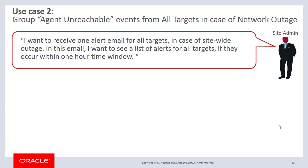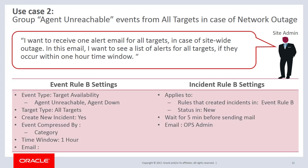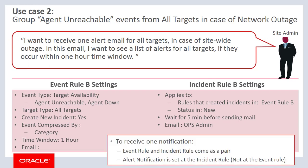Another use case: a data center site administrator wants to receive only one email alert when there is a site-wide outage and all targets go down. He doesn't want hundreds of emails in his mailbox, but still wants a list of targets affected by the outage. He can do this by creating an Event Rule to group agent-unreachable events from all targets in the data center. Again, two key points: Event Rule and Incident Rule must come as a pair, and alert notification must be set at the Incident Rule side, not the Event Rule side. Those are the two points in common when configuring notification with compression.